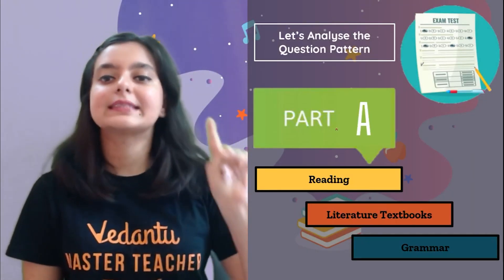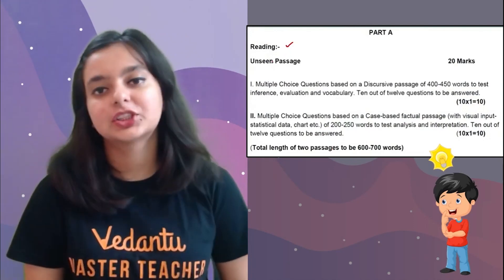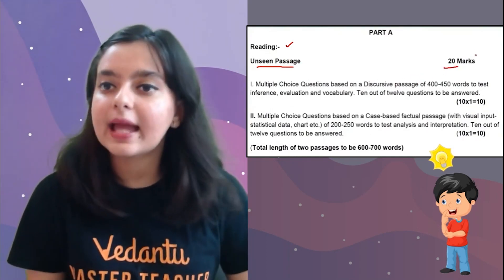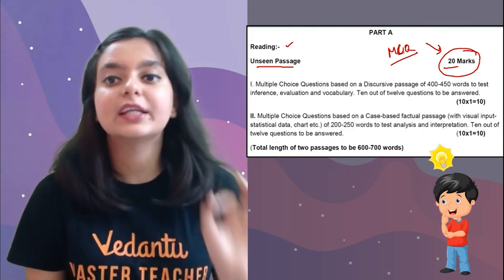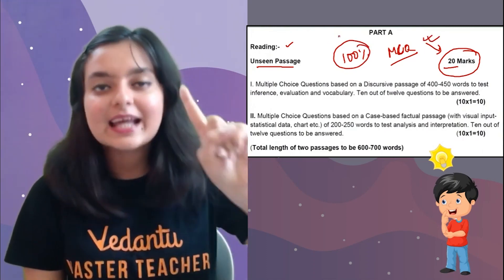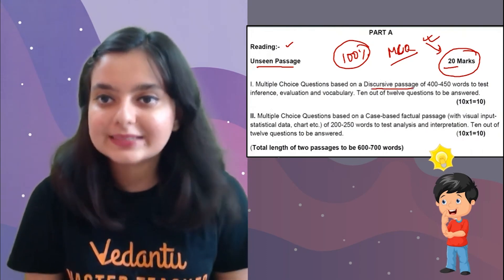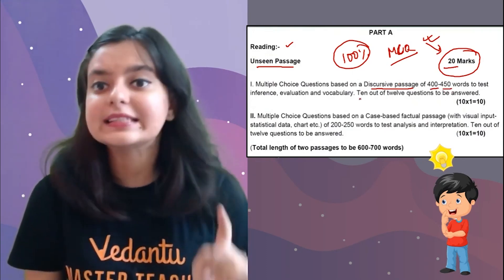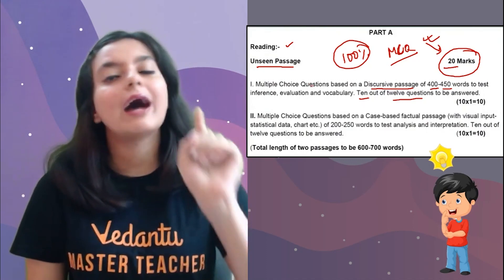Now let's analyze the question pattern. Part A is going to have reading passages — unseen passages — coming for 20 marks. You will have two passages and the complete 20 marks is MCQ, so you can actually score 100% marks here, 20 out of 20. You would have MCQ questions based on a discursive passage of 400 to 500 words. You have to answer 10 questions out of 12 — you have a choice.